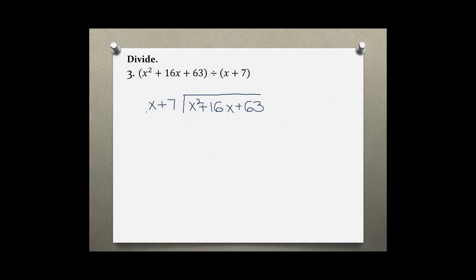Now by what do we have to multiply x to get x squared? We have to multiply by x because x times x gives us x squared and x times 7 gives us positive 7x.